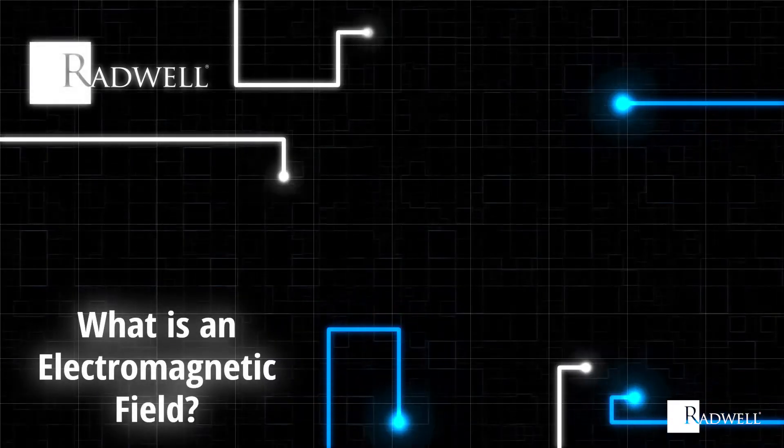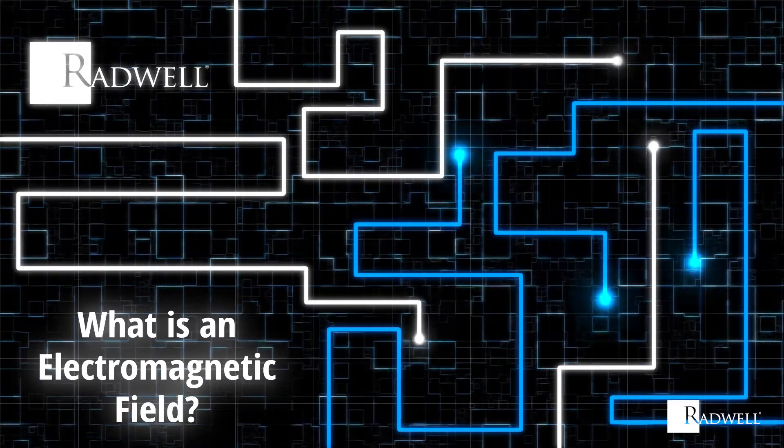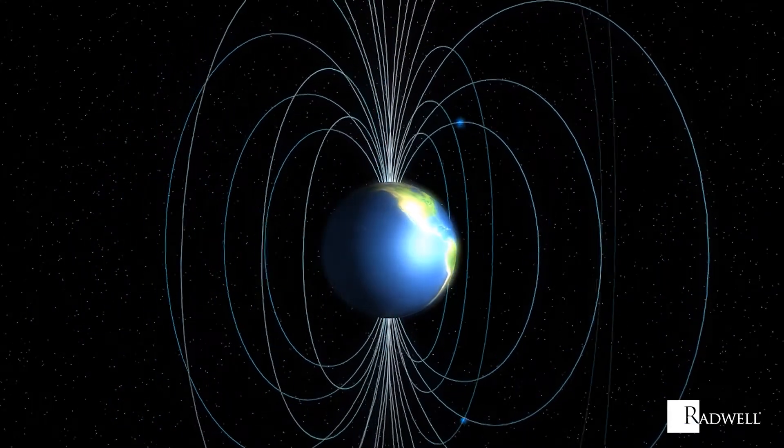What is an electromagnetic field? Both naturally occurring and man-made in origin, electromagnetic fields are created through the motion of an electric charge.